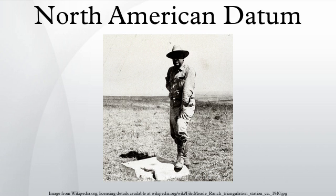The datum declares the Meads Ranch triangulation station to be 39° 13' 26.686" north latitude, 98° 32' 30.506" west longitude. NAD27 is oriented by declaring the azimuth from Meads Ranch to Waldo to be 255° 28' 14.52" from north. The latitude and longitude of every other point in North America is then based on its distance and direction from Meads Ranch. If a point was x meters in azimuth y degrees from Meads Ranch, measured on the Clark Ellipsoid of 1866, then its latitude and longitude on that ellipsoid were defined and could be calculated.